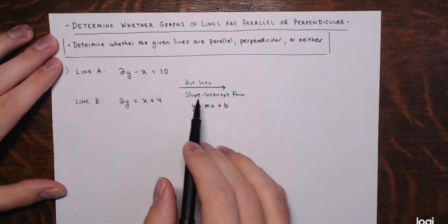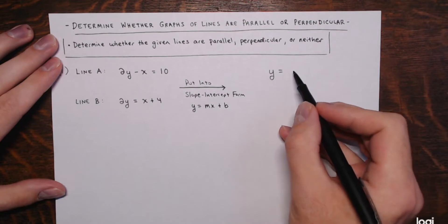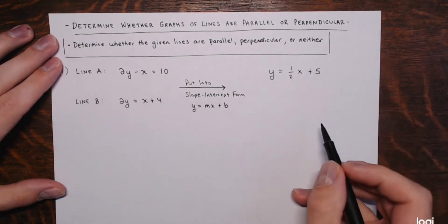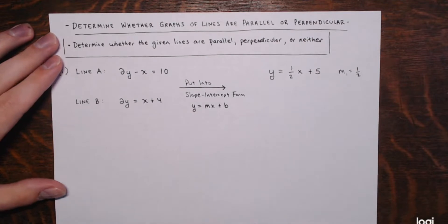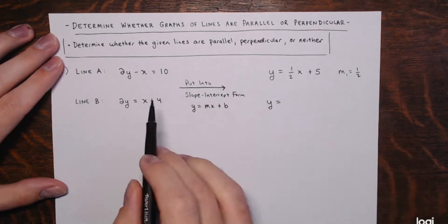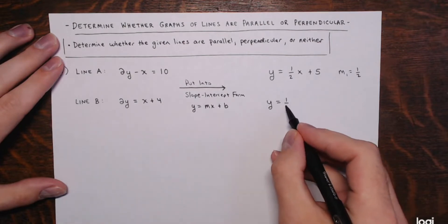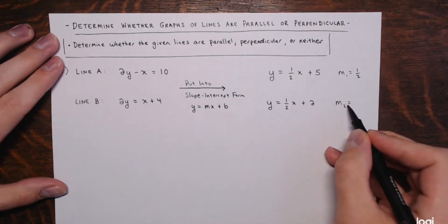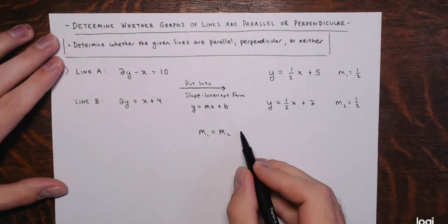You just solve for y. For line A: add x and then divide everything by 2, so line A is y equals (1/2)x plus 5. Slope m1 is 1/2, and the y-intercept is 5. For the second line, divide everything by 2 as well, giving y equals (1/2)x plus 2. They have the same slope — m2 is also 1/2, so m1 equals m2.